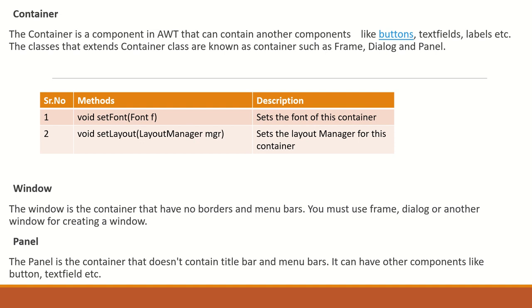Window is a container that has no borders and no menu bars — only a square area. To create a useful window, you must use Frame, Dialog, or another Window. Panel is also a container that does not contain a title bar or menu bar, but it can have other components like buttons, text fields, and labels.